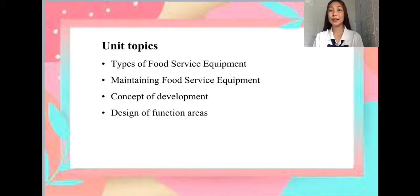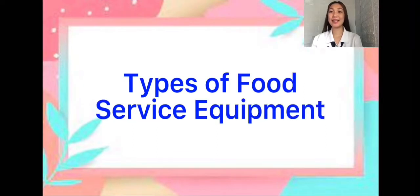The unit topics are: Types of food service equipment, maintaining food service equipment, concept development, and lastly, the design of function areas. Food service equipment may be defined as all tools, utensils, crockery, and cutlery necessary for the preparation, cooking, holding, serving of food, and washing.